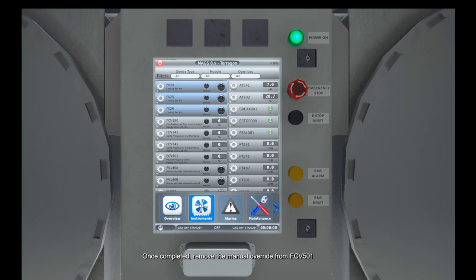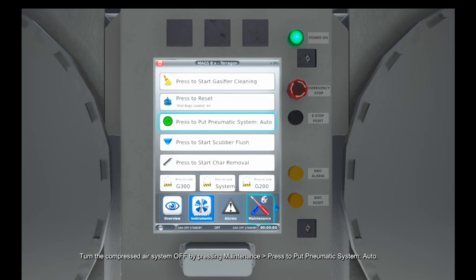Once completed, remove the manual override from FCV501. Turn the compressed air system off by pressing Maintenance, Press to put Pneumatic System Auto.